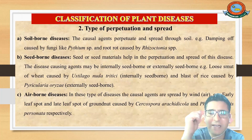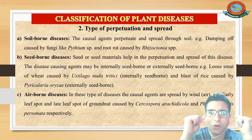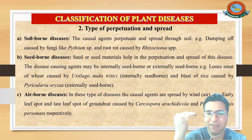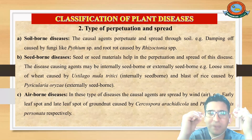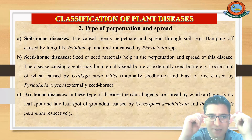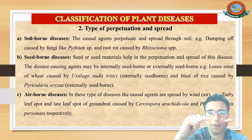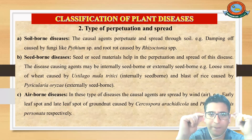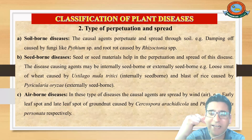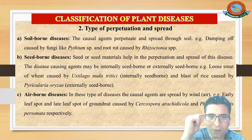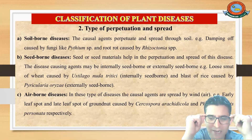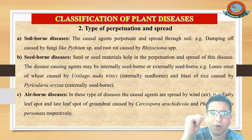Similarly, we have got three more types of disease based on the type of perpetuation and spread — that is, the main transmission structures. Based on the type of spread, we have again three types of disease. Number one is soil-borne disease.